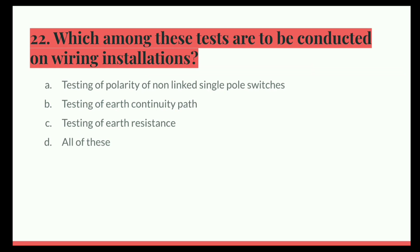Next question. Which among these tests are to be conducted on wiring installations? Option A, testing of polarity of unearthed single pole switches. B, testing of earth continuity path. C, testing of earth resistance. D, all of these. And the correct answer is all of these.